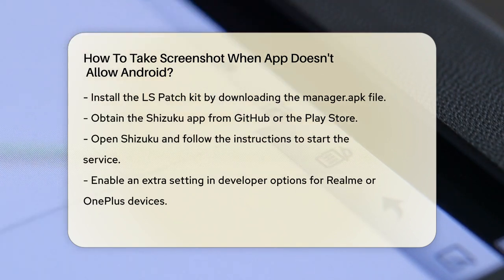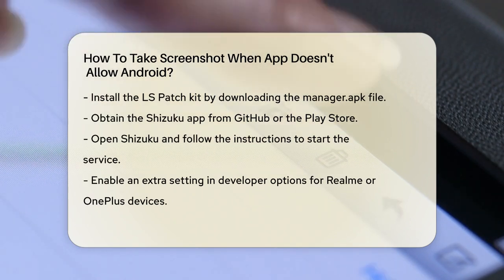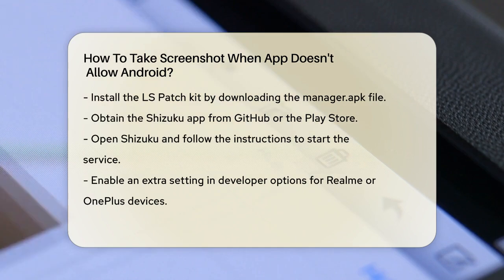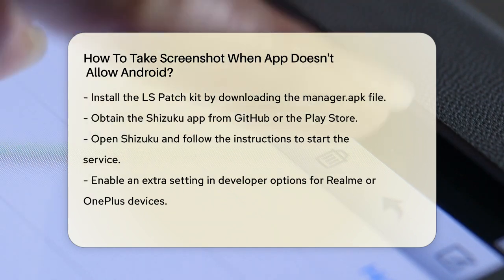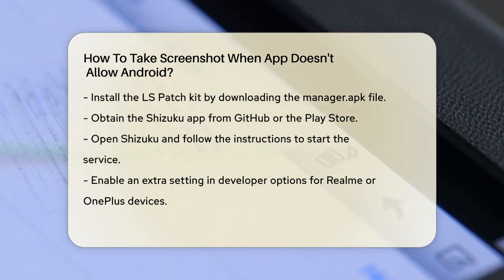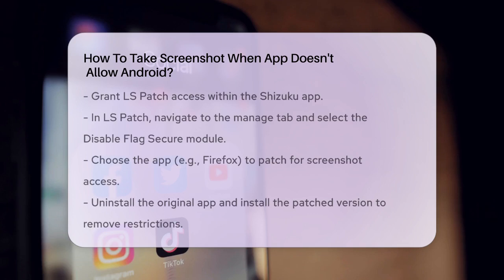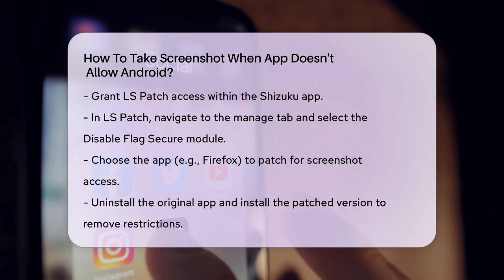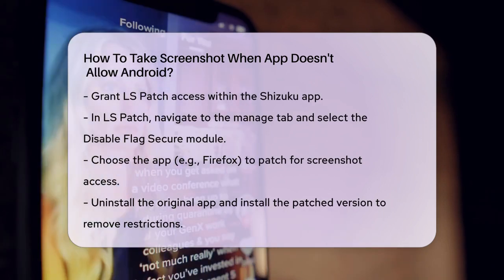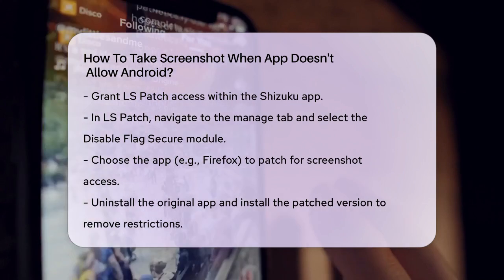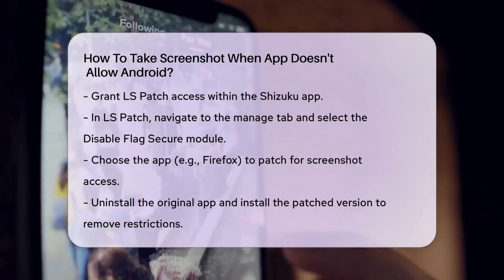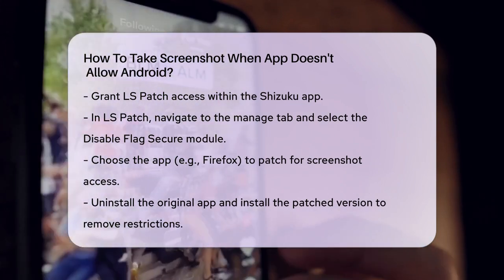After setting up Shizuku, give it access to the LSPatch application. Now open the LSPatch app and go to the Manage tab. Here you'll see the Disable Flag Secure module.